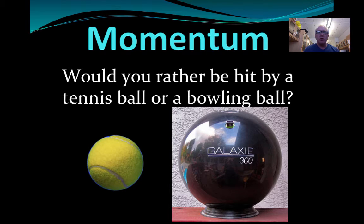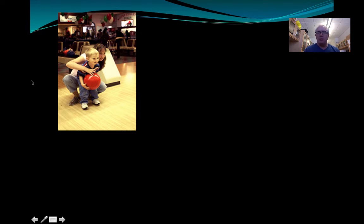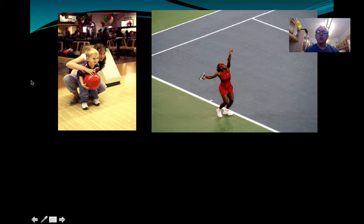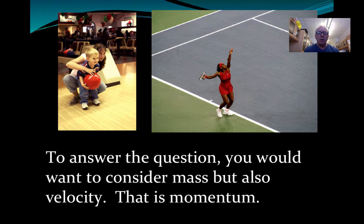But to answer this question, maybe you want a little bit more information. The bowling ball will be delivered to you by this person, and the tennis ball will be delivered by you by this person. And that really is what momentum is about. It's not just the mass of the object, it's the velocity as well. I'm also intrigued by the people who originally picked bowling ball and given the new information, now switch over to tennis ball. But momentum is the mass and the velocity together.